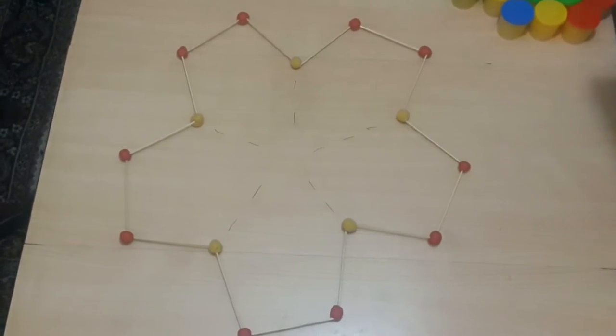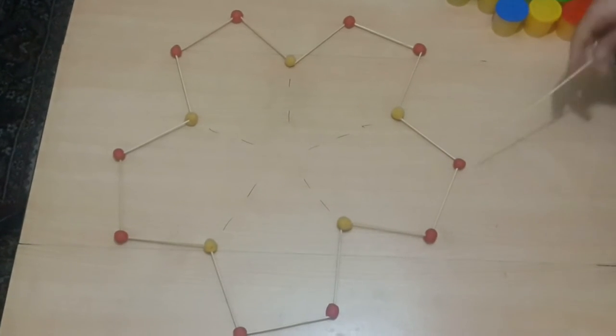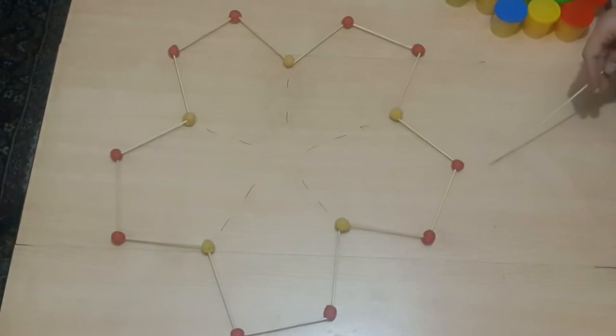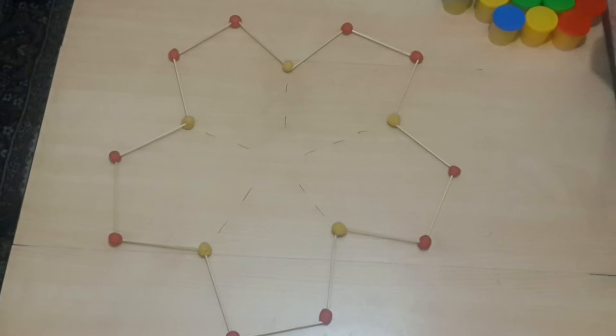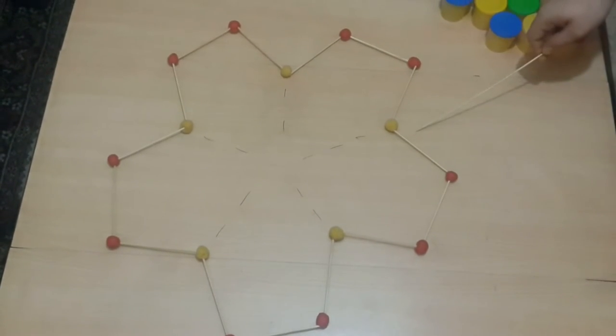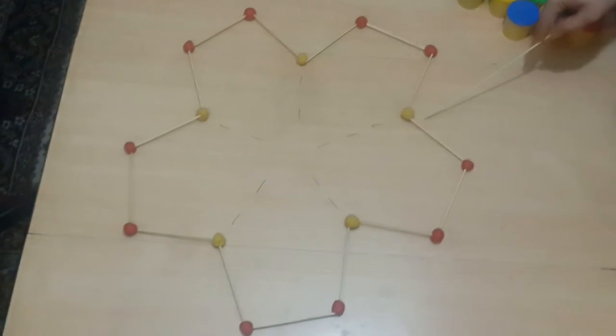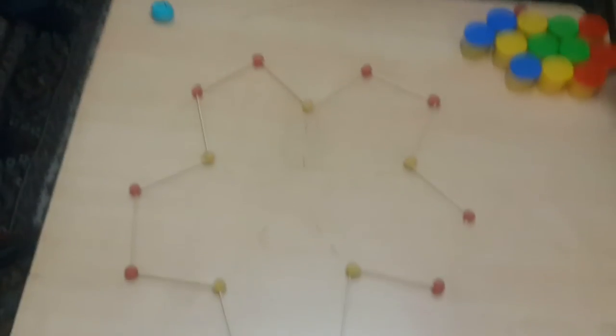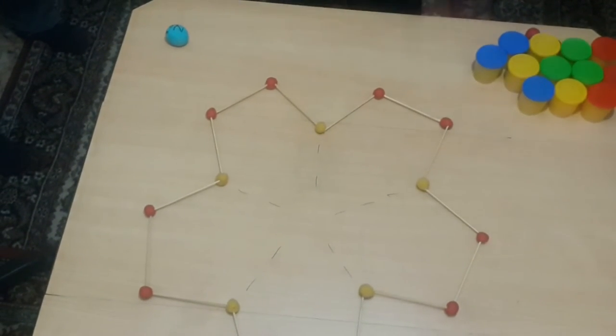We use play-doh and skewers. Red colors are carbons, included with their hydrogen. Yellow ones are oxygen molecules and sodium molecules are the blue color.